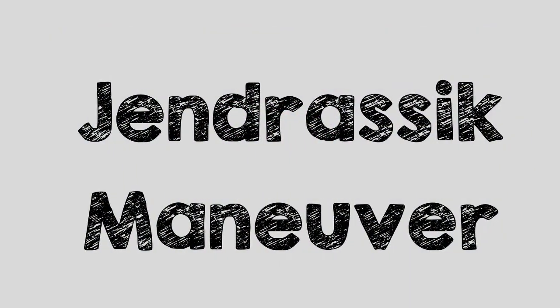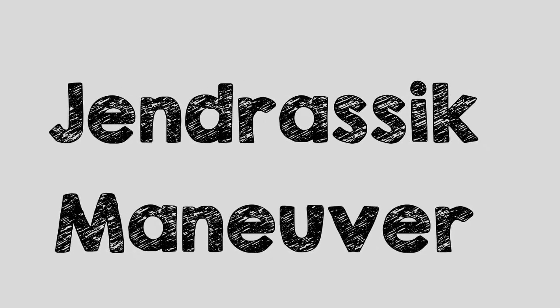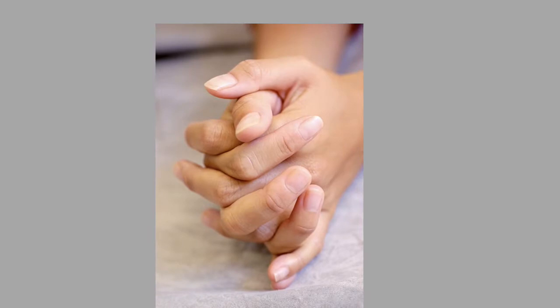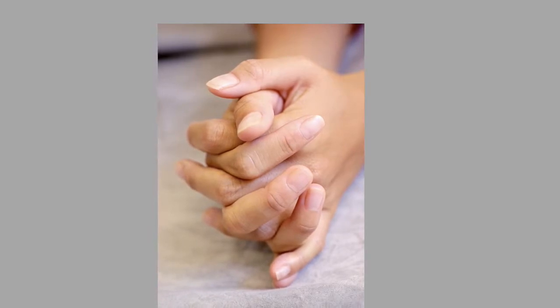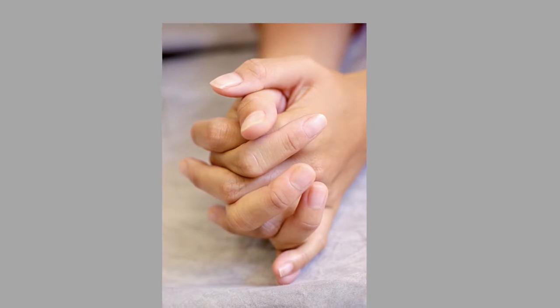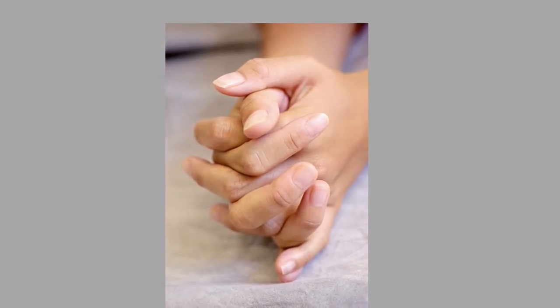To prevent conscious control over reflexes, try the Gendrassic maneuver. To perform the Gendrassic maneuver, have your test subject interlock their fingers. As you are performing the knee tap, tell your test subject to pull on their hands.